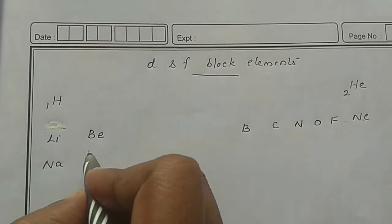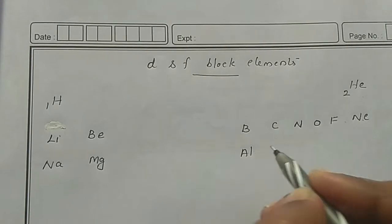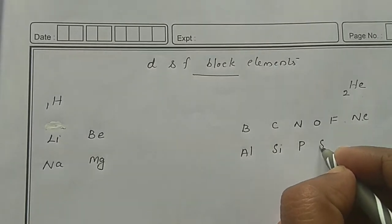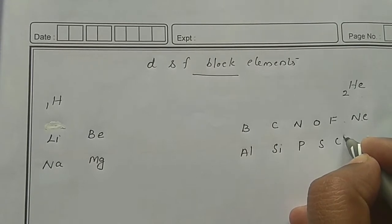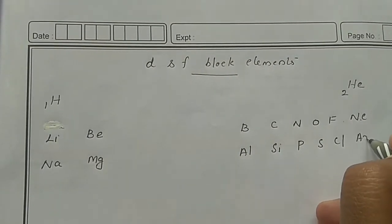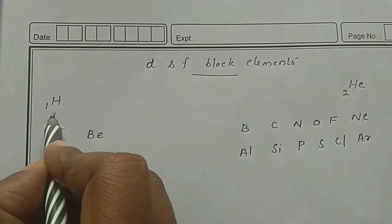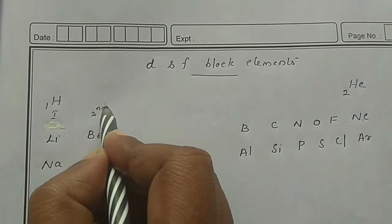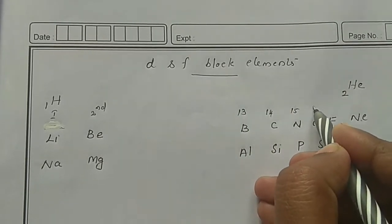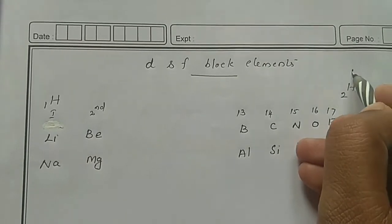Then sodium, magnesium, aluminum, silicon, phosphorus, sulfur, chlorine follow in the third period. The groups are numbered: group 1, group 2, then groups 13, 14, 15, 16, 17, and 18.